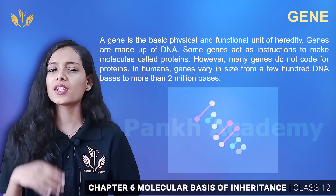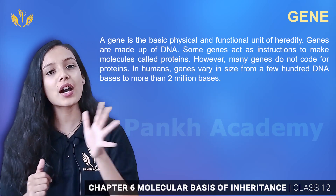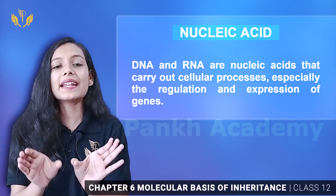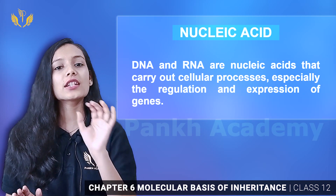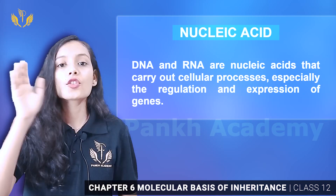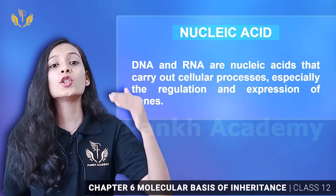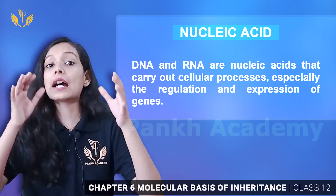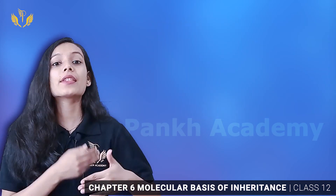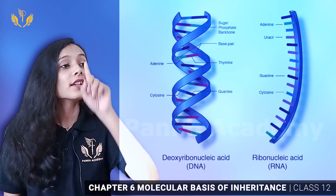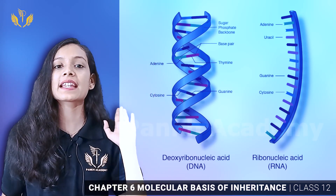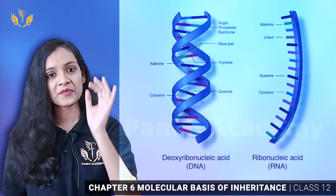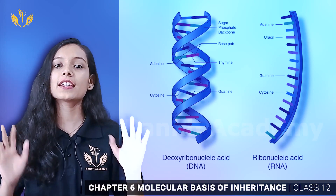We have seen that what passes from one generation to the other generation are genes. Now where are the genes present? They will be in DNA or in RNA. So DNA and RNA we call nucleic acid. DNA is deoxyribonucleic acid and RNA is ribonucleic acid.